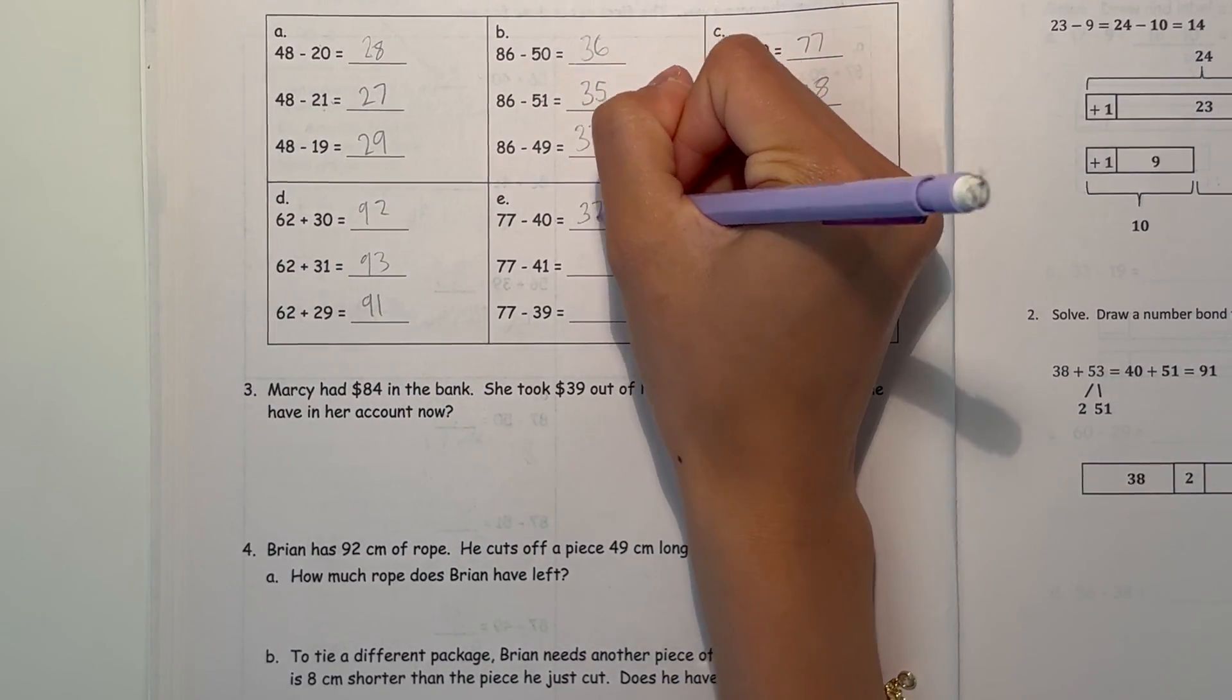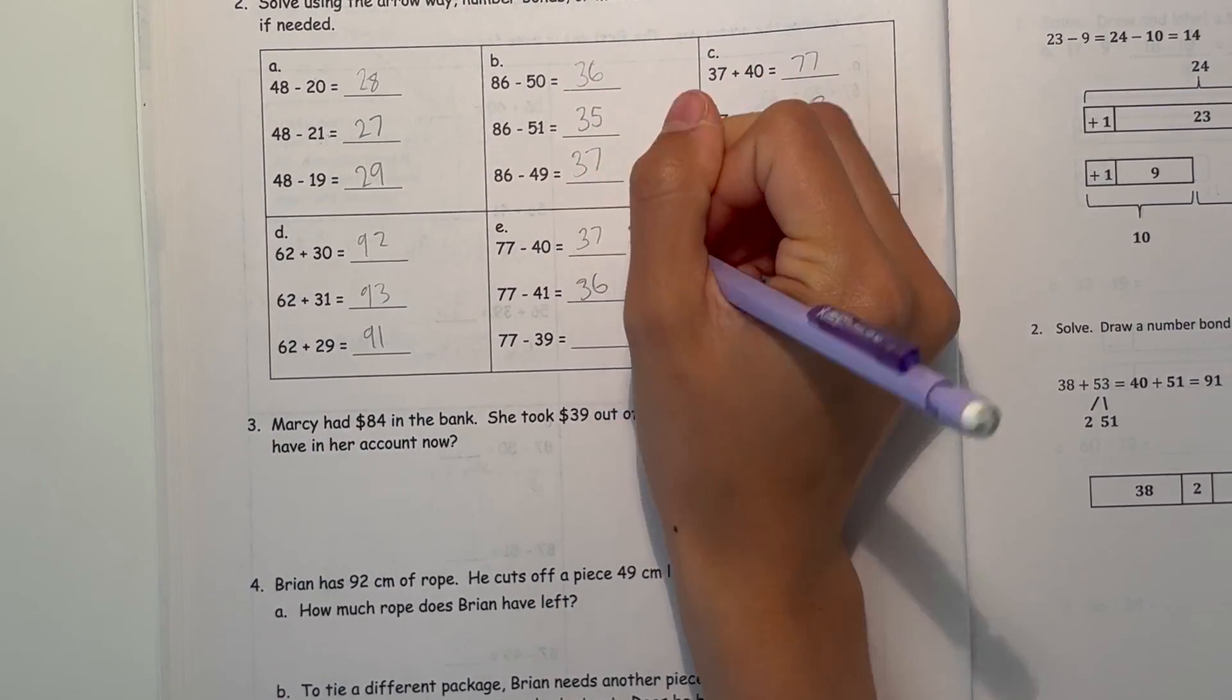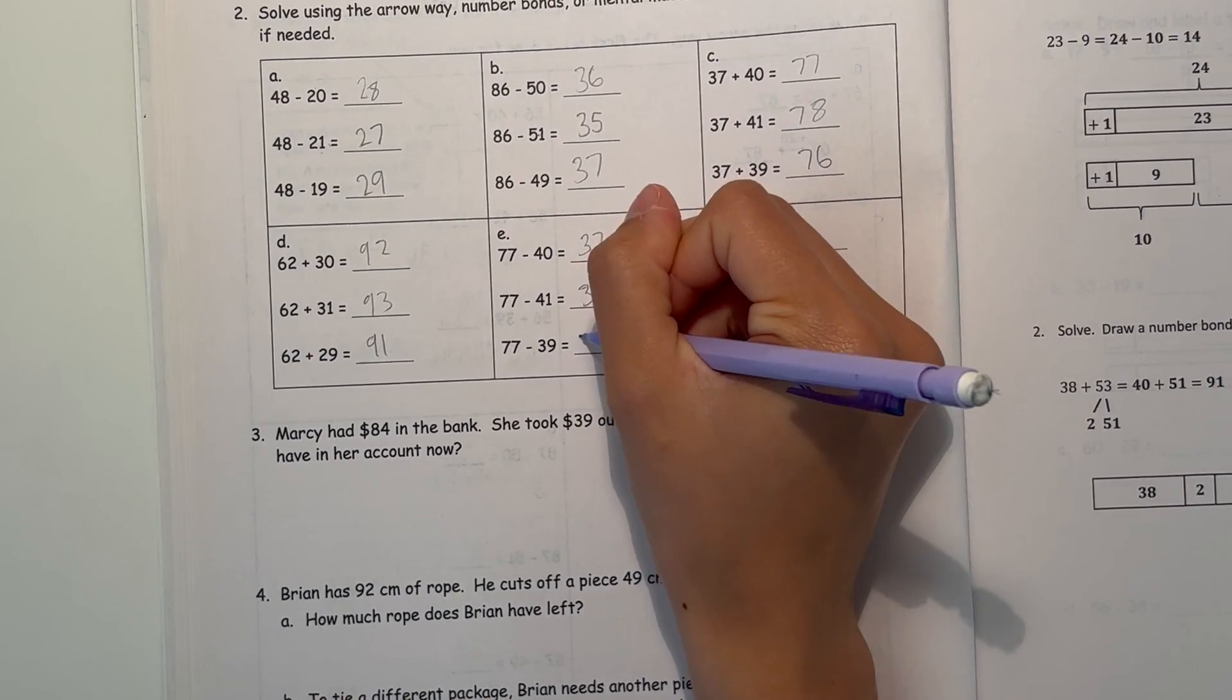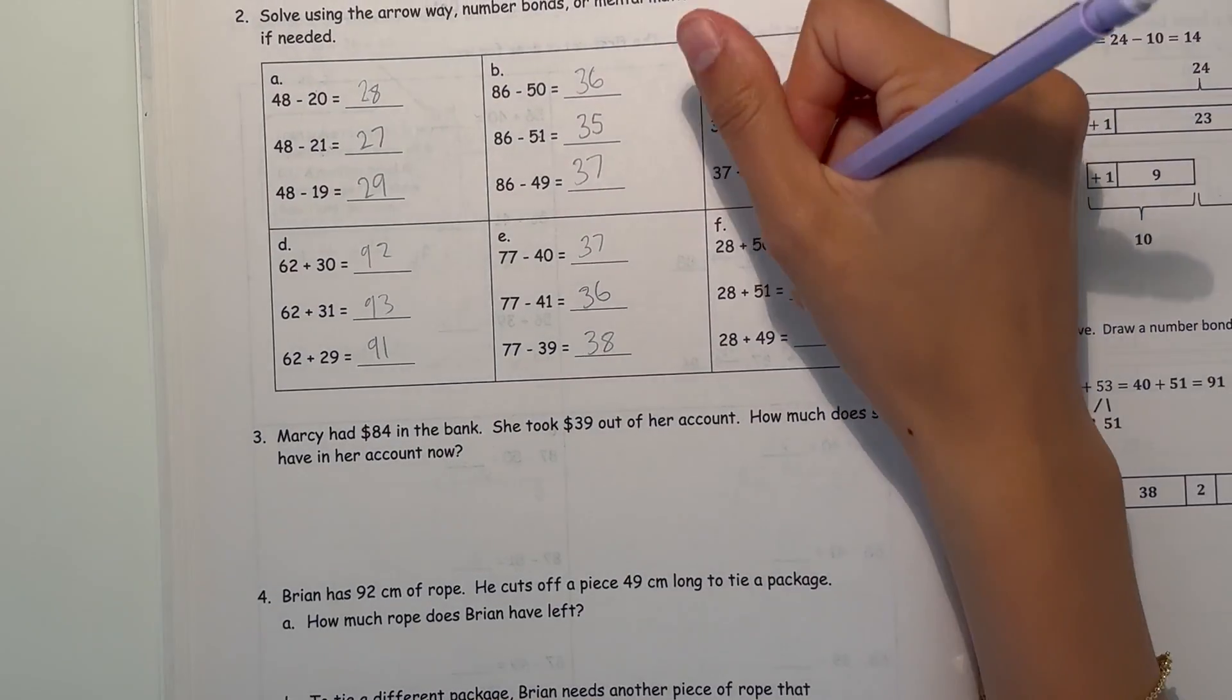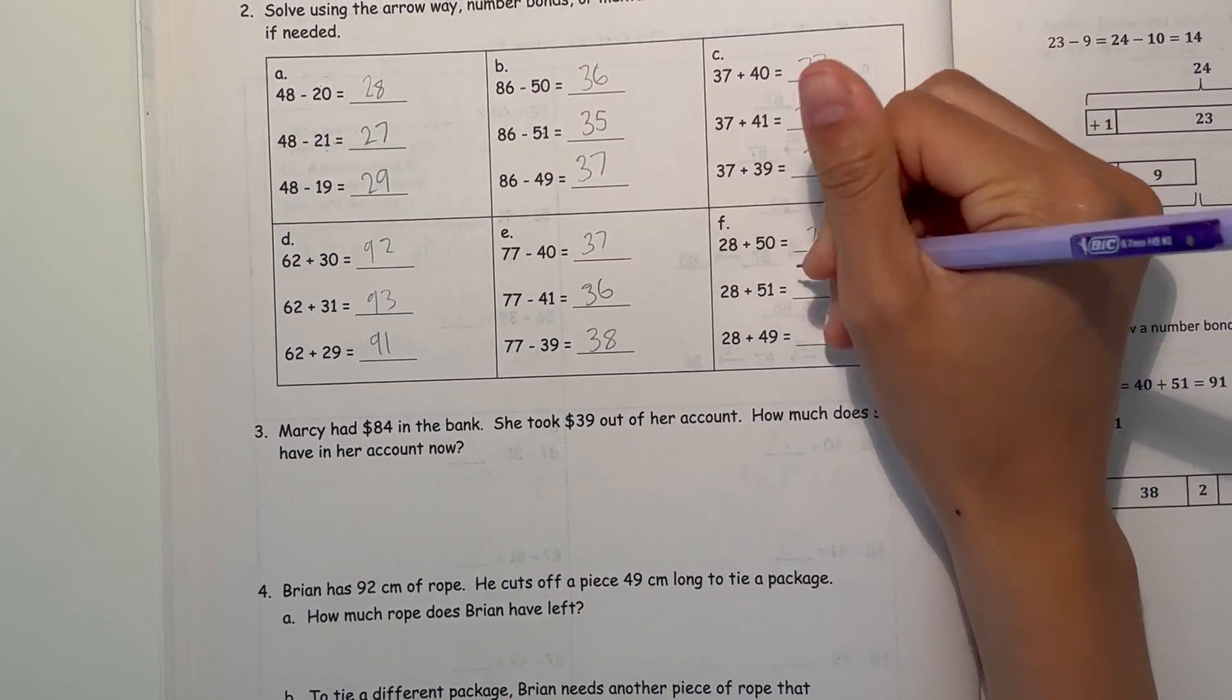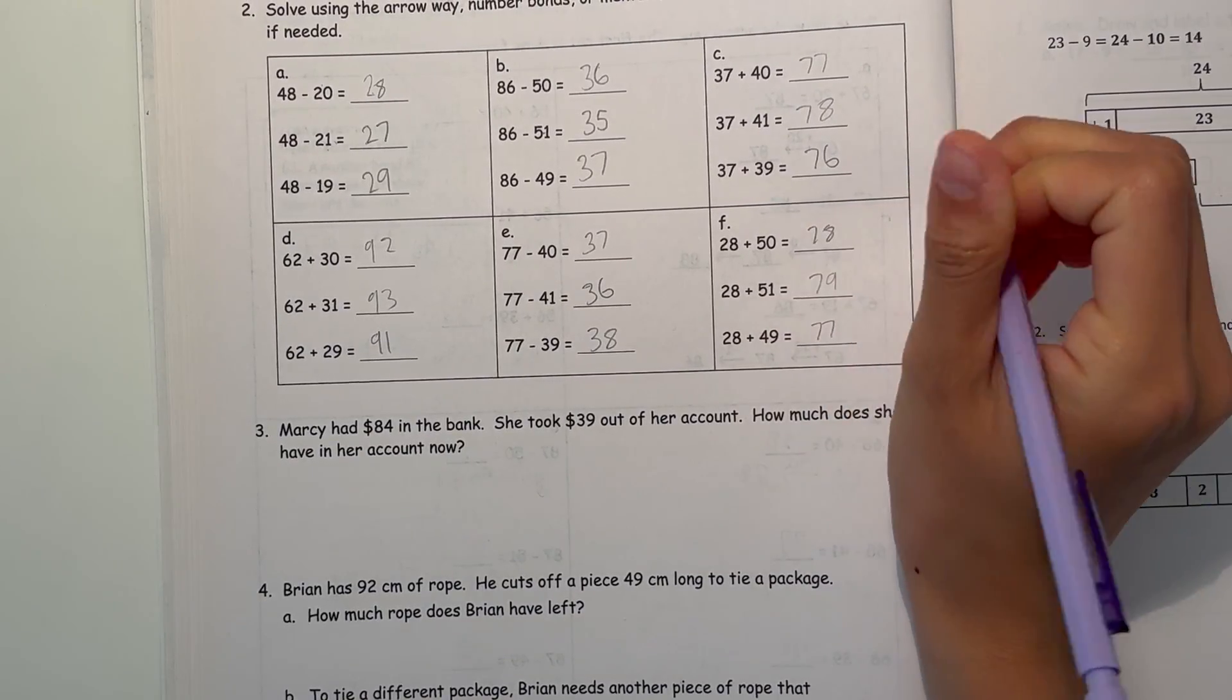77 minus 40 is 37. Subtracting more, then it should be one less. If you're subtracting less, it should be one more. Now 28 plus 50 is 78. If you're adding more, that's 79. If you're adding less, that's 77.